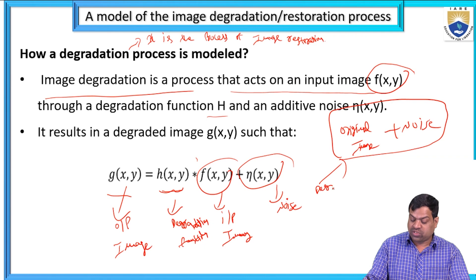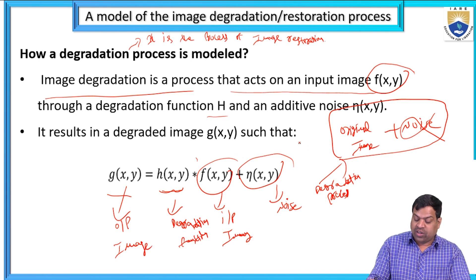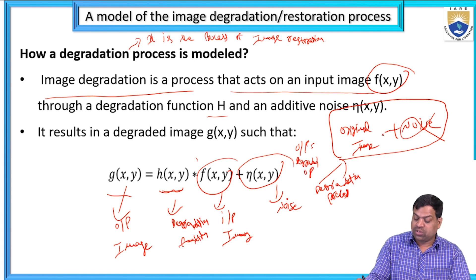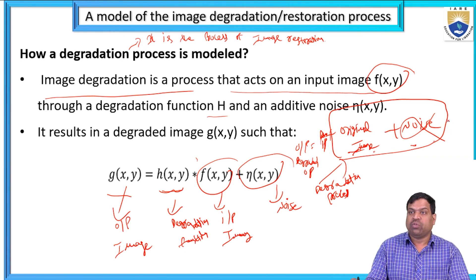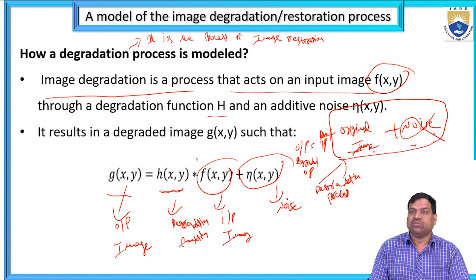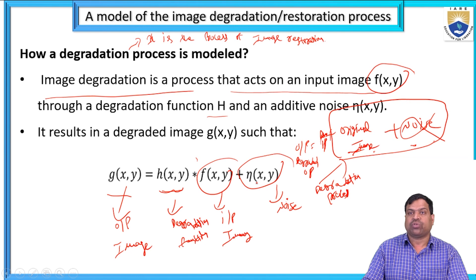We use the degradation process to remove noise. The degraded output equals the original image convolved with the degradation function plus noise: g(x,y) = h(x,y) * f(x,y) + η(x,y). This is the degradation process equation. Here h(x,y) is the spatial representation of the degradation function, and the symbol star (*) indicates convolution.